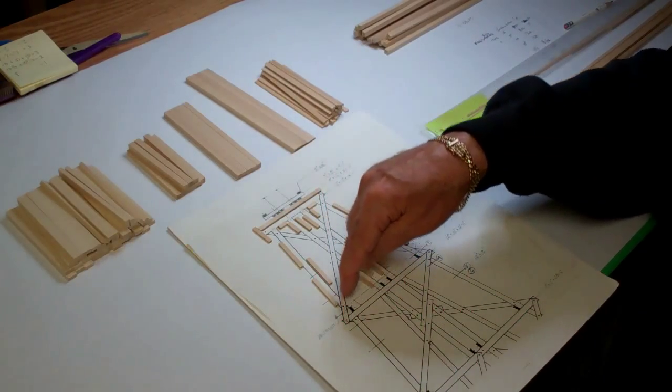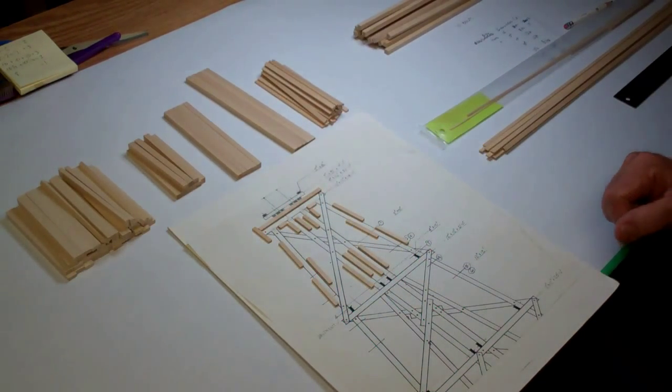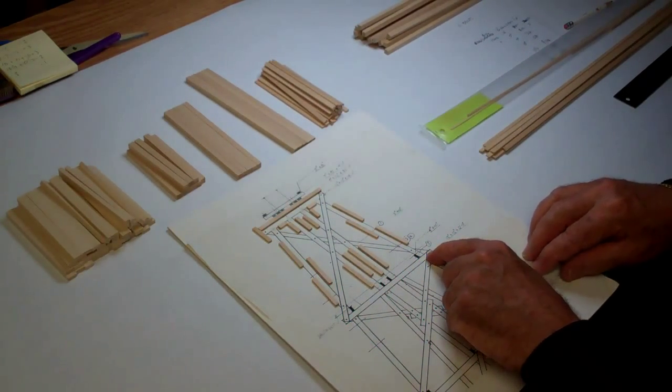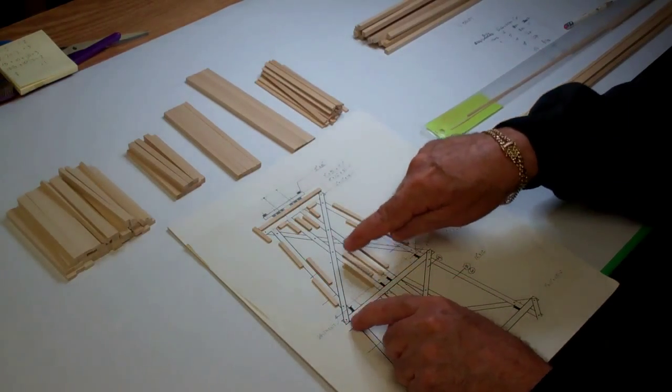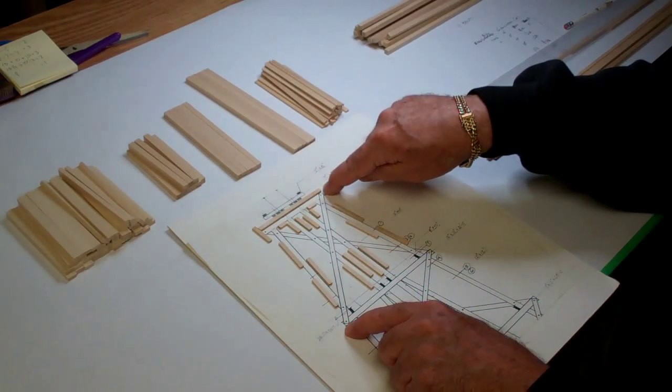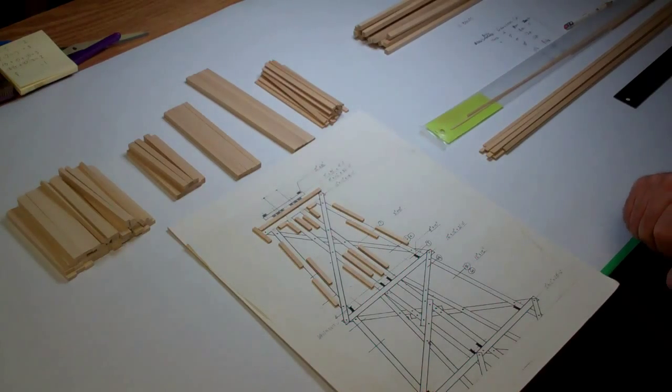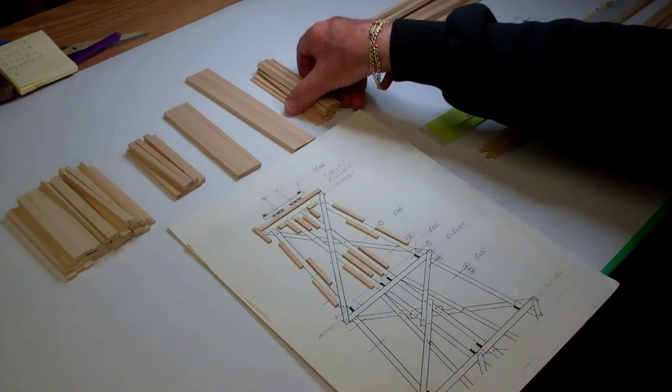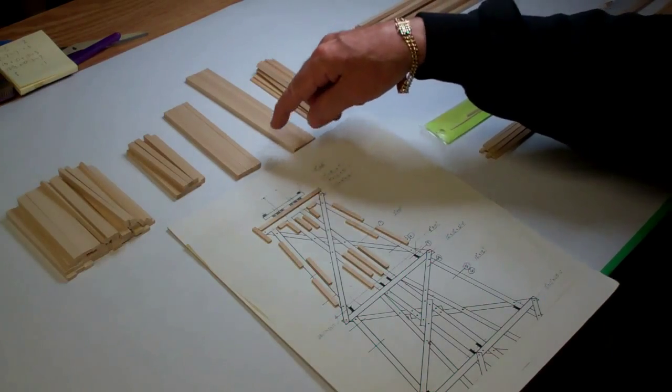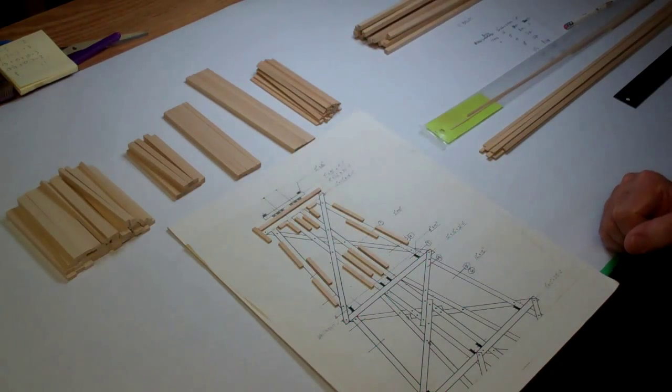The diagonal bracing, I'll leave until last because I'll have to actually measure those on each one just to get the accuracy. Now that I've got them all cut to length, the next step will be to stain all the pieces.